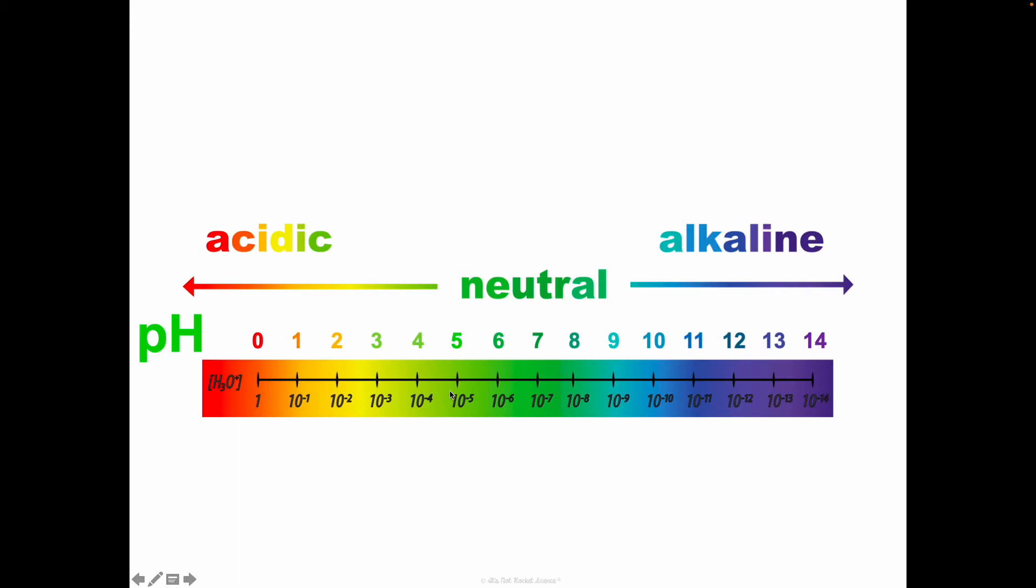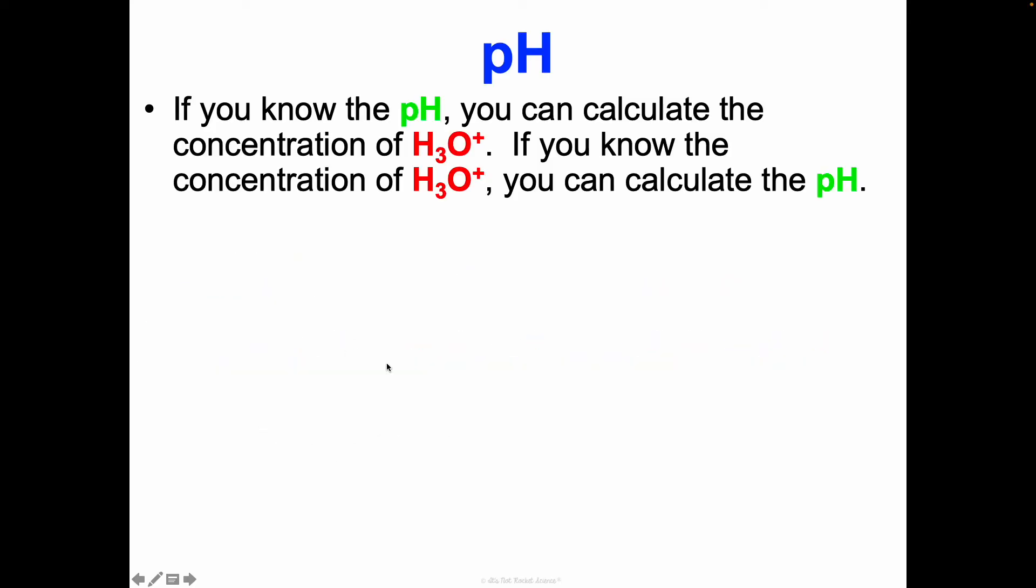It's different from pOH, which we're gonna look at in a second. But let's look at how to calculate this, where these logs come from. If you know pH, you can calculate the hydronium ion concentration. If you know the concentration of hydronium ion, you can calculate the pH. pH is the negative log of the concentration of hydronium ion, and the concentration of hydronium ion is 10^-pH.